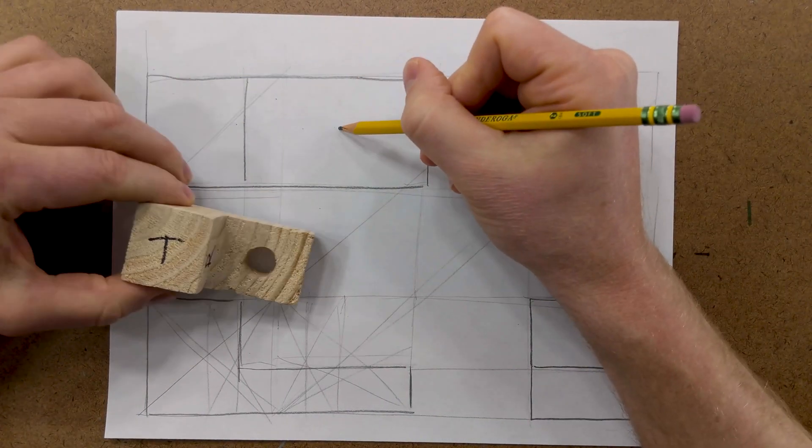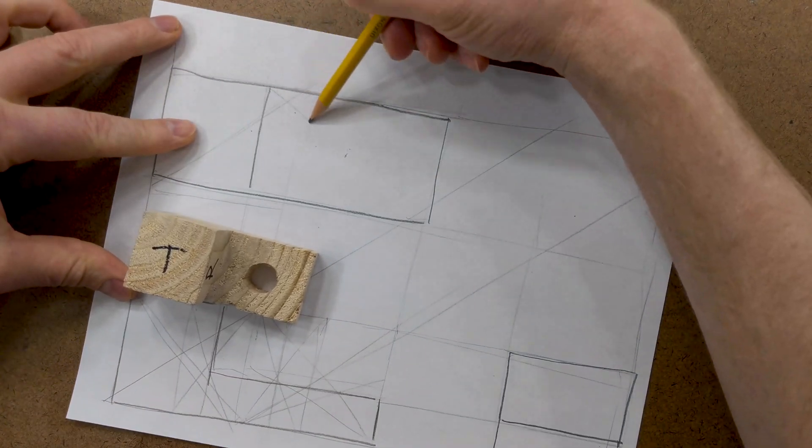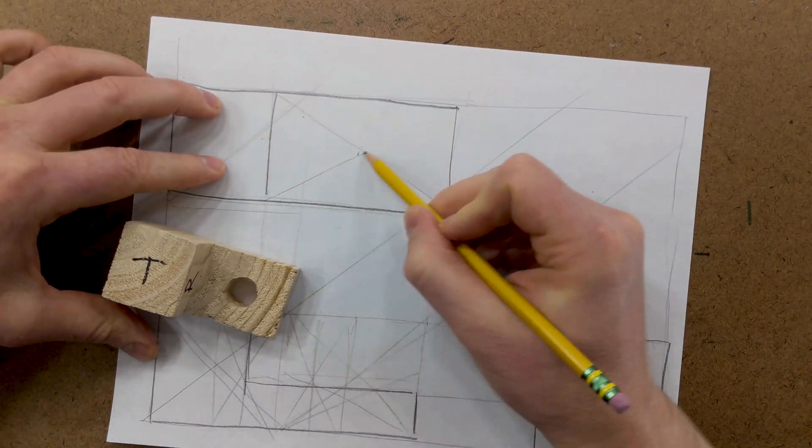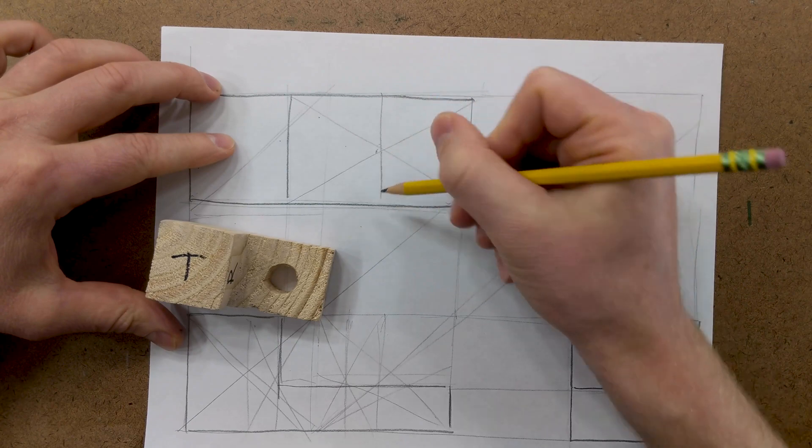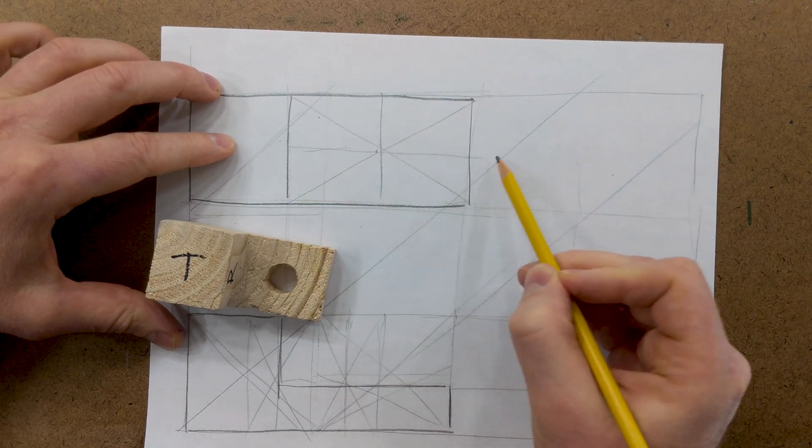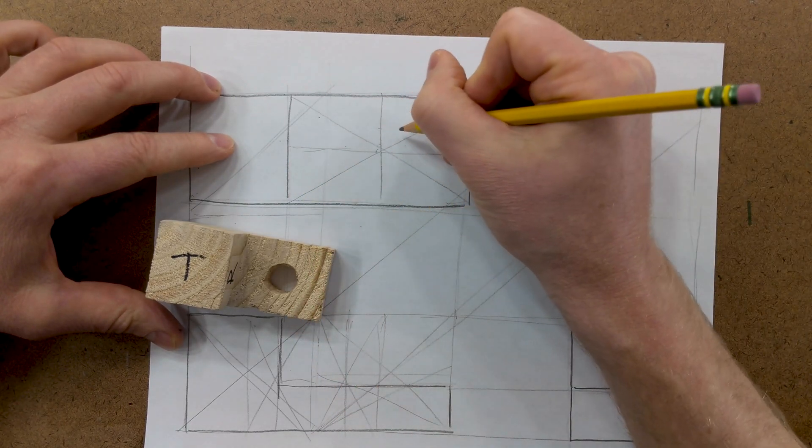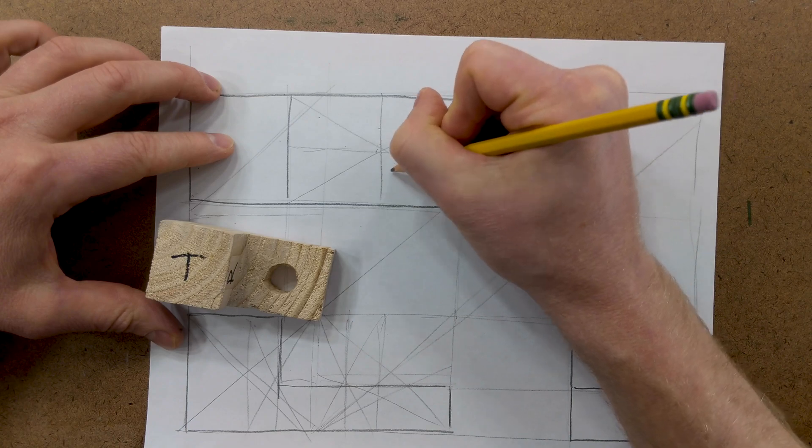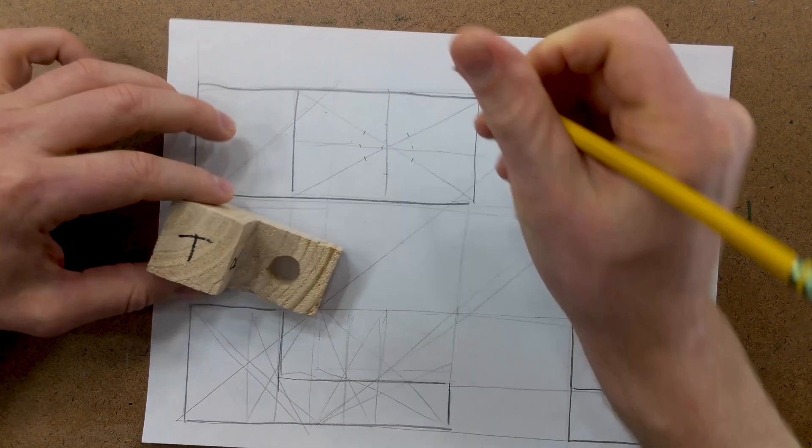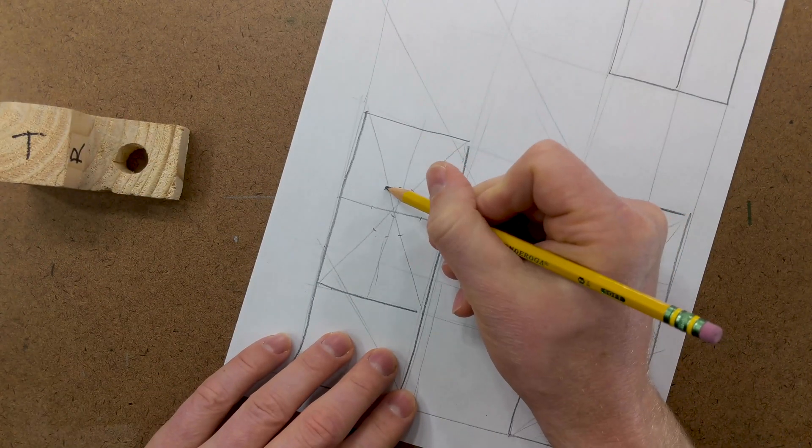We're going to say the hole is in the center, so let's go ahead and find that center. And then when you're drawing a circle freehand, you can just add some more lines, and then add some tick marks. And then just draw that arc.